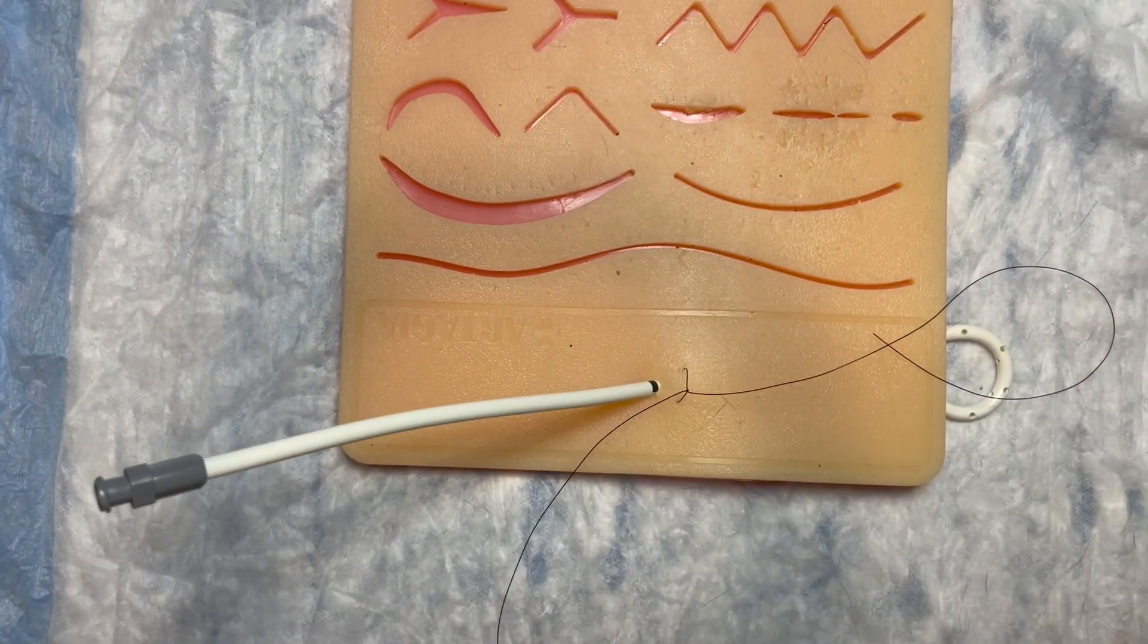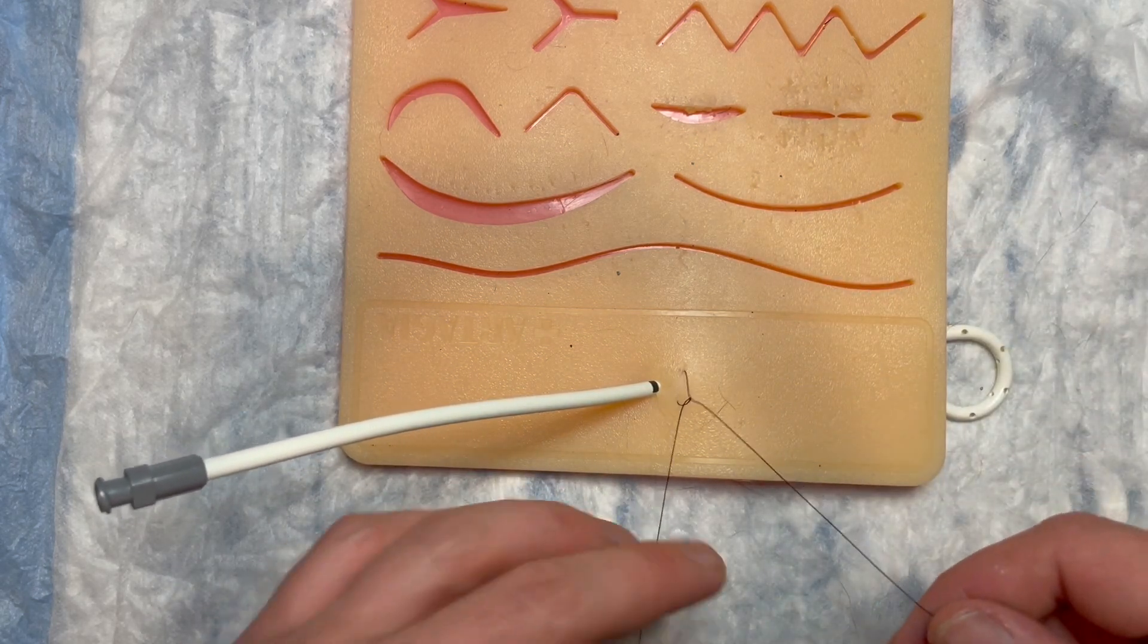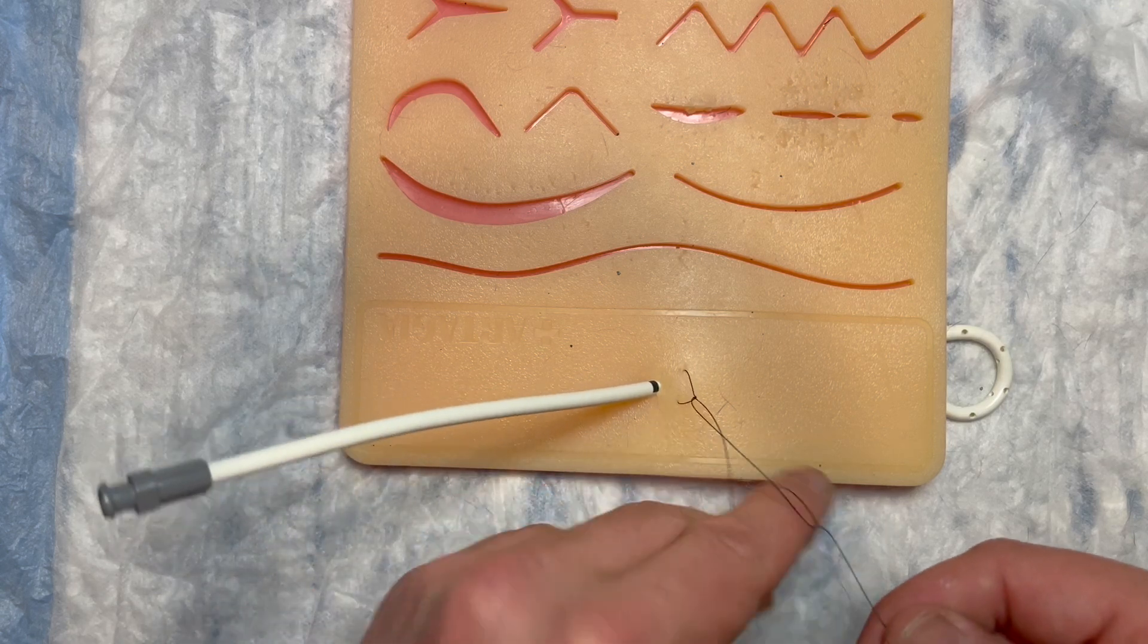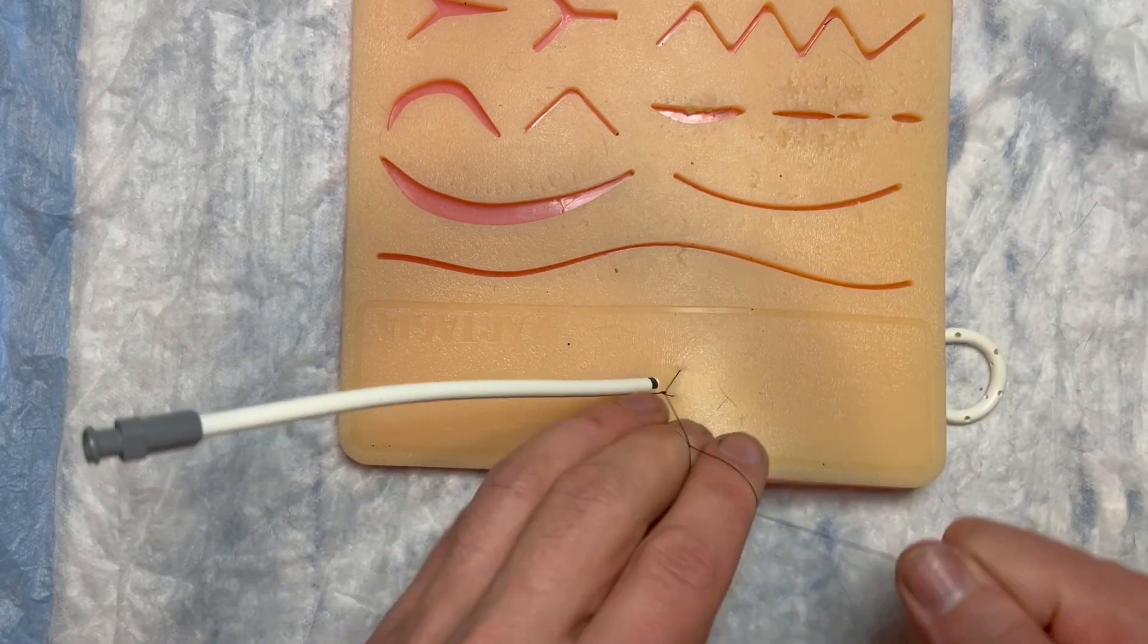If I did a square knot I wouldn't be able to do that. So now that I've got this down to the level that I want, I'm then going to secure it like I would any other knot and create a square knot here.